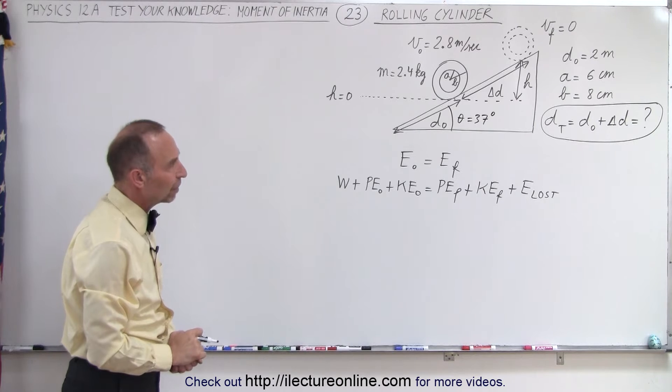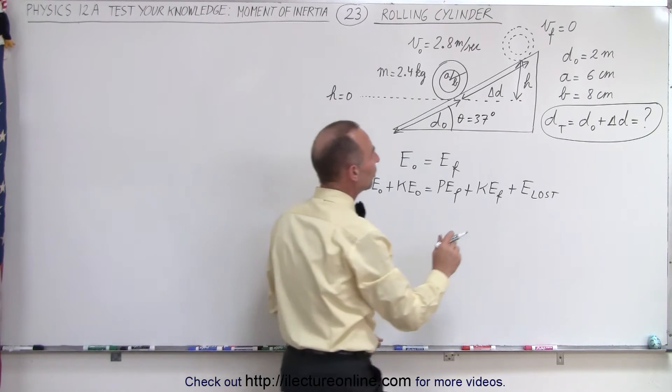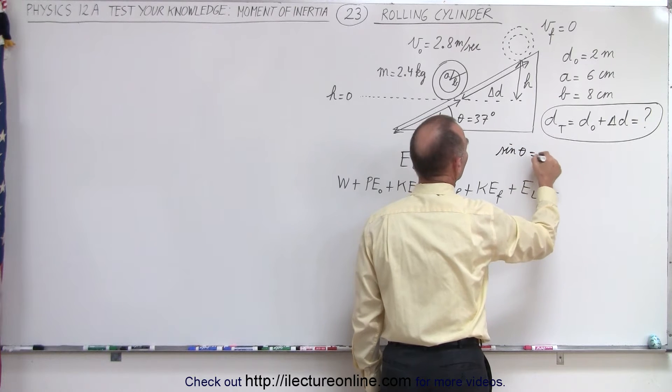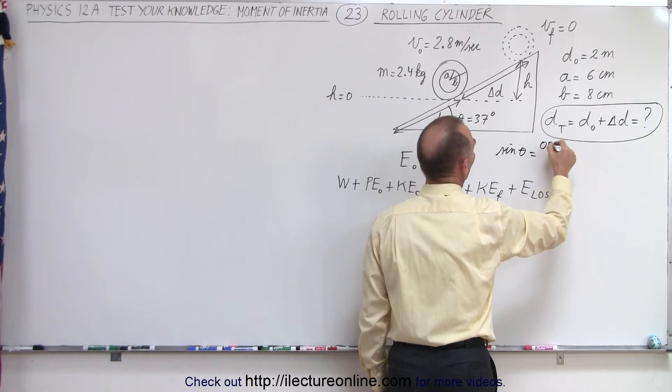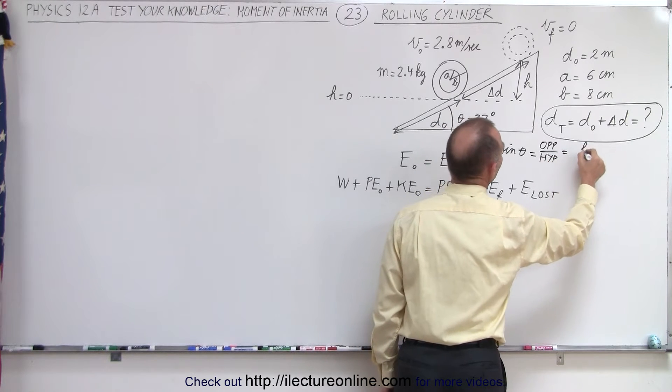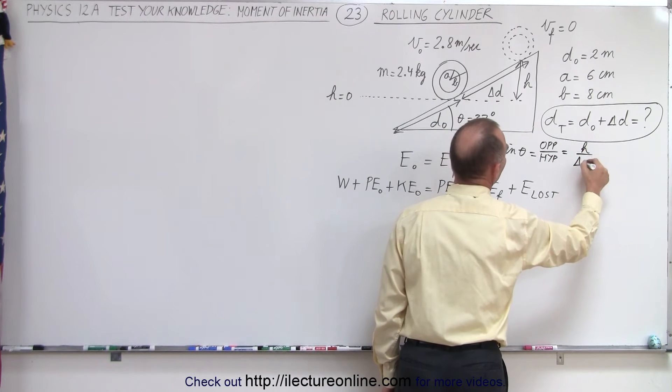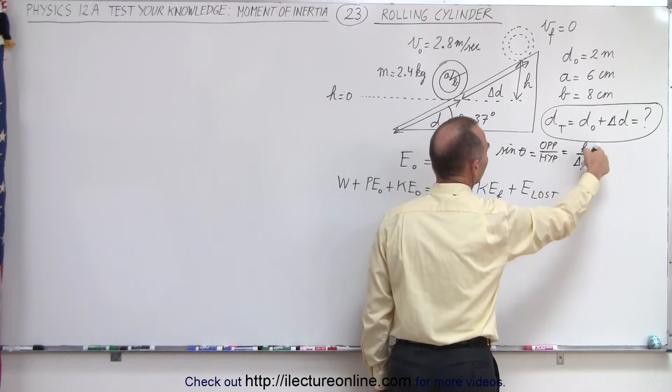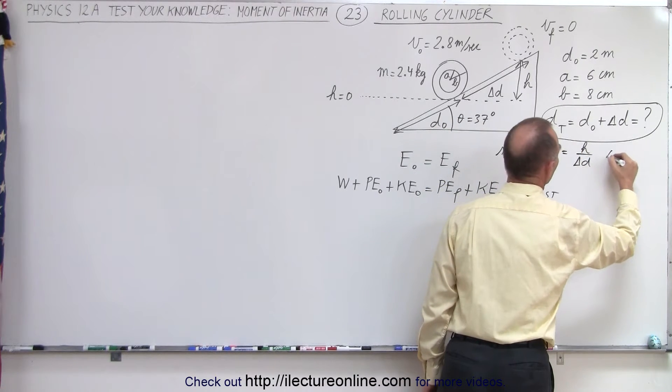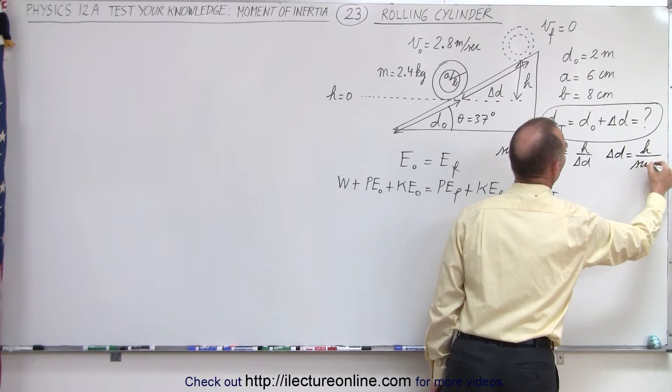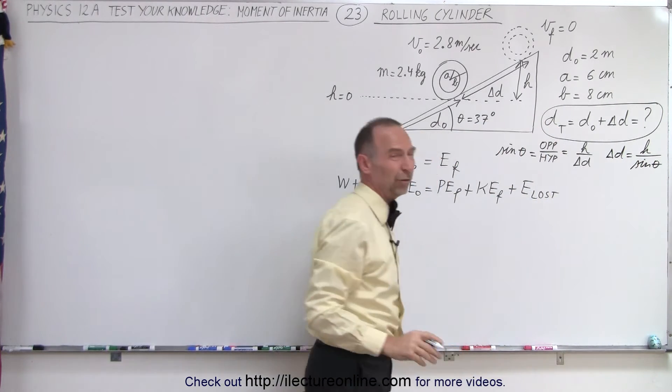So how do we find that relationship? Well, you can see that by definition, the sine of theta is equal to the opposite over the hypotenuse. And in this case, the opposite would be h and the hypotenuse would be delta d, which means delta d is going to be the h divided by the sine of theta. So delta d can be written as h divided by the sine of theta, in case we need that.